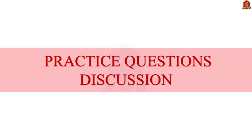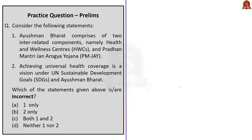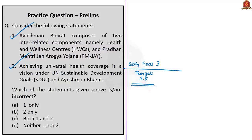Now let's move on to the practice questions discussion session. The first question gives two statements and asks which are incorrect. Statement 1: Ayushman Bharat comprises two interrelated components, namely health and wellness centers and Pradhan Mantri Jan Arogya Yojana — this is correct. Statement 2: Achieving universal health coverage is a vision under UN Sustainable Development Goals and Ayushman Bharat — this is also correct, as achieving UHC is target 3.8 under SDG Goal 3. Since neither statement is incorrect, the correct answer is Option D.